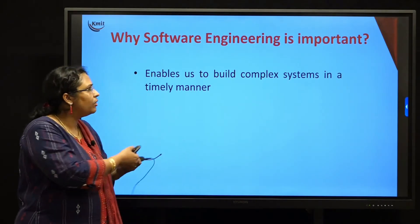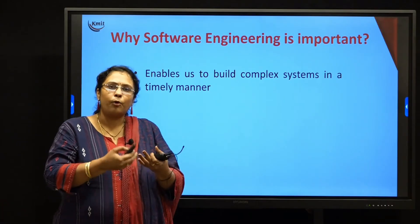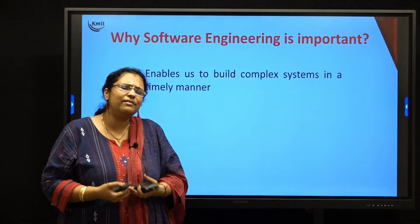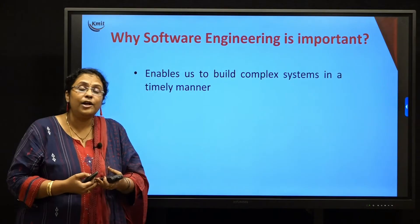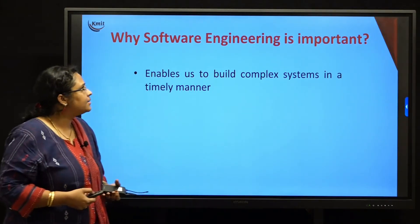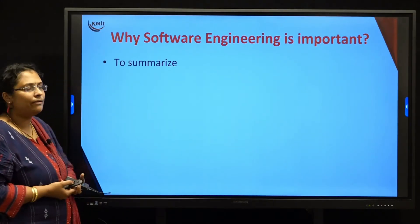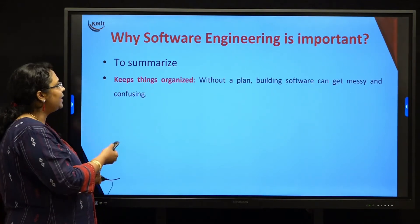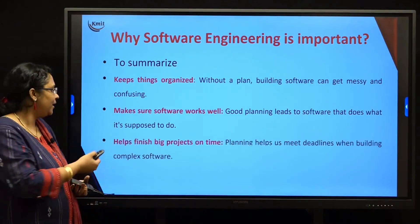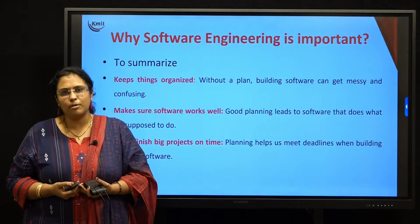The same thing happens in software engineering. If you follow the proper order, giving certain milestones, you will be able to deliver any complex product to the market and to the customer in the given time period. To summarize these three points: software engineering is important because it keeps things organized, it makes sure that software works well, and it helps finish big projects on time.